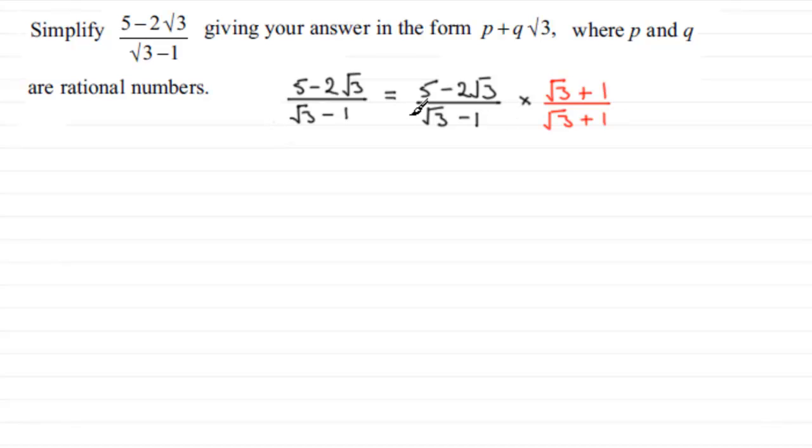So we can think of these two terms in brackets there. Same here, same up here, and the same here. So it's like multiplying two brackets together. So all we've got to do now is just expand our brackets. So on the top, we've got 5 times root 3, which is 5 root 3. And then 5 times the plus 1, that's plus 5.